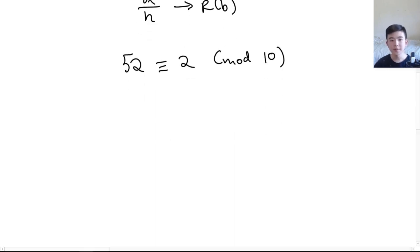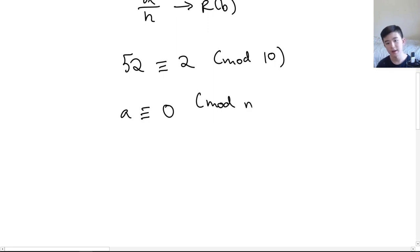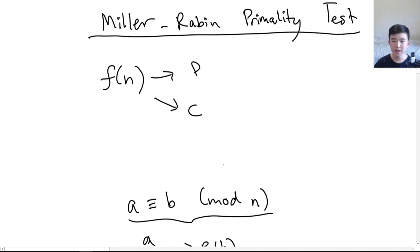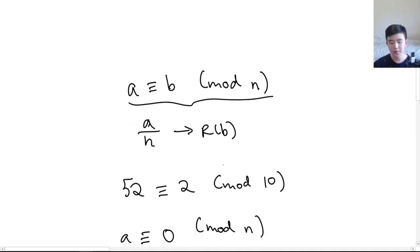Also, if we write a ≡ 0 mod n, that basically means when we divide a by n we get a whole number — we get an integer. So that means that a is divisible by n, or n is a divisor of a. That's all the necessary notation for modular arithmetic.